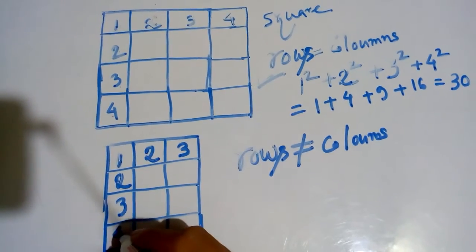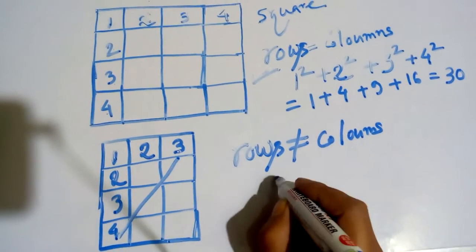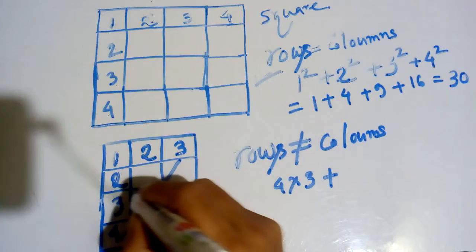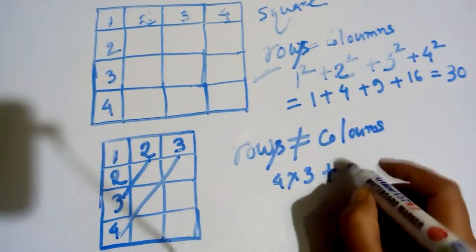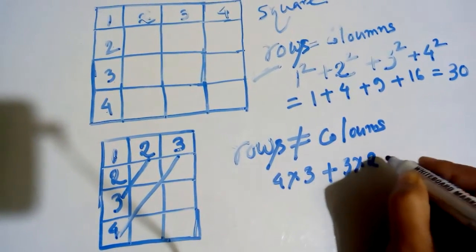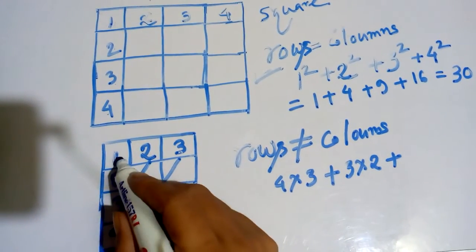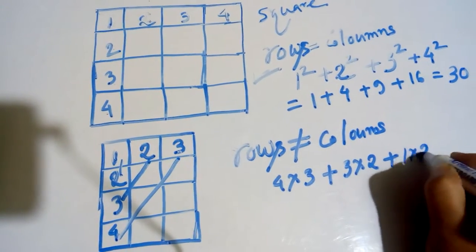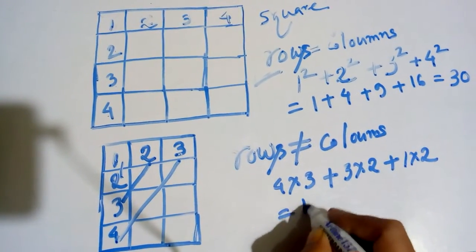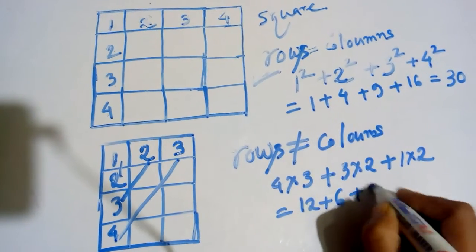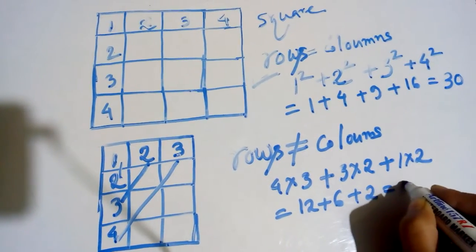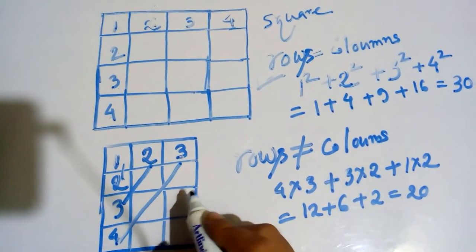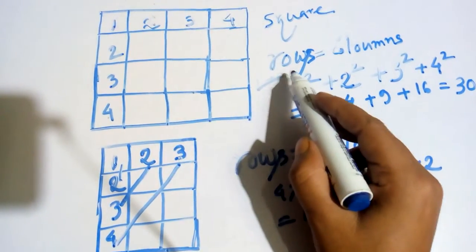When rows do not equal columns, the process is: first multiply 4 × 3, then add 3 × 2, then add 1 × 2. The result is: 4 × 3 = 12, plus 3 × 2 = 6, plus 2 = 20. There are a total of 20 squares in the second figure.